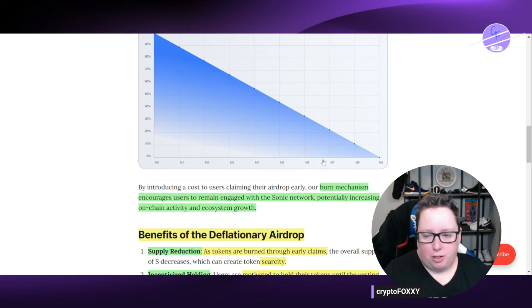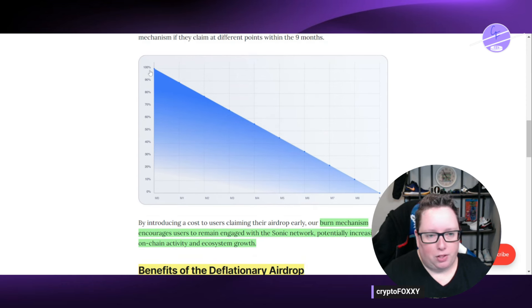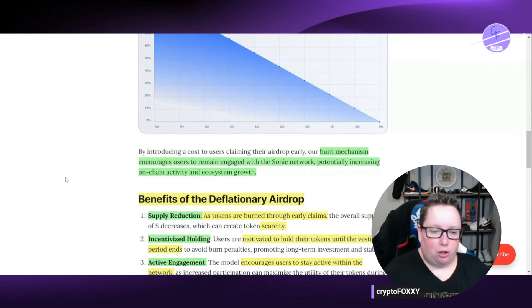So you can see here, this represents months up to nine months, and this is going to be your percentage. So if you wait the nine months, you're going to get 100%. Basically, if you wait one month in, you're going to get just under 90%. So burn mechanism encourages users to remain engaged with the sonic network, potentially increasing on-chain activity and ecosystem growth.